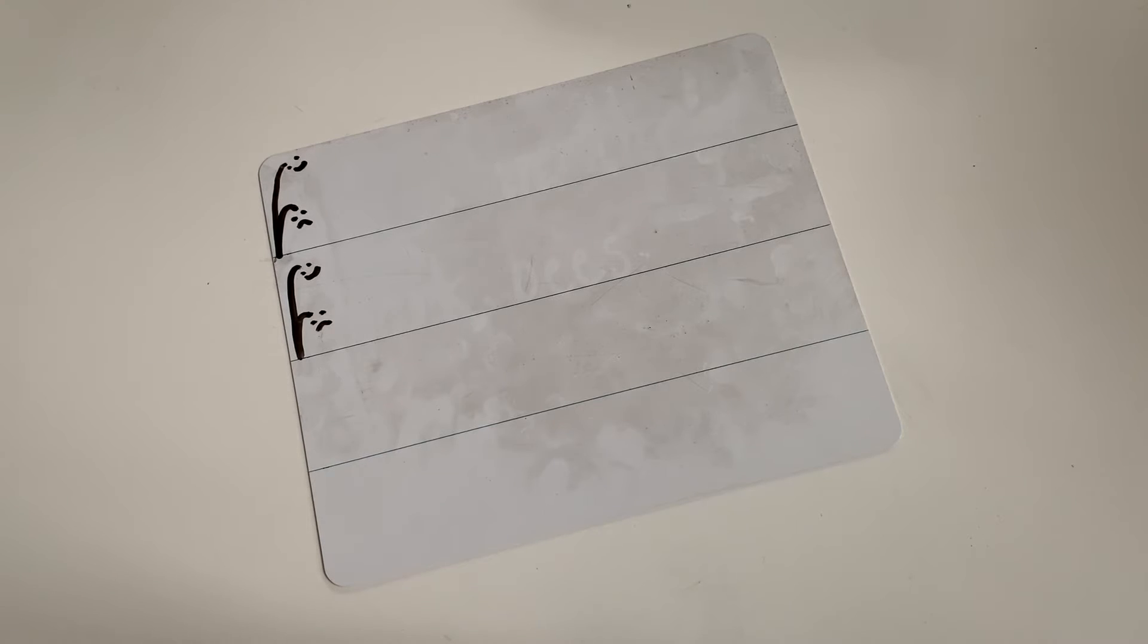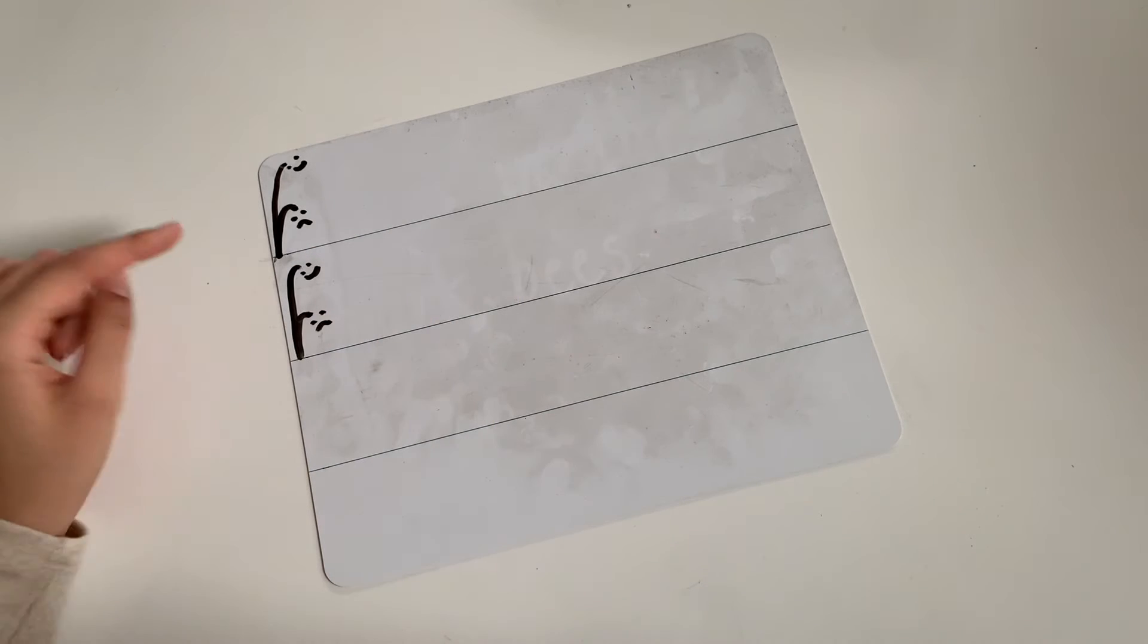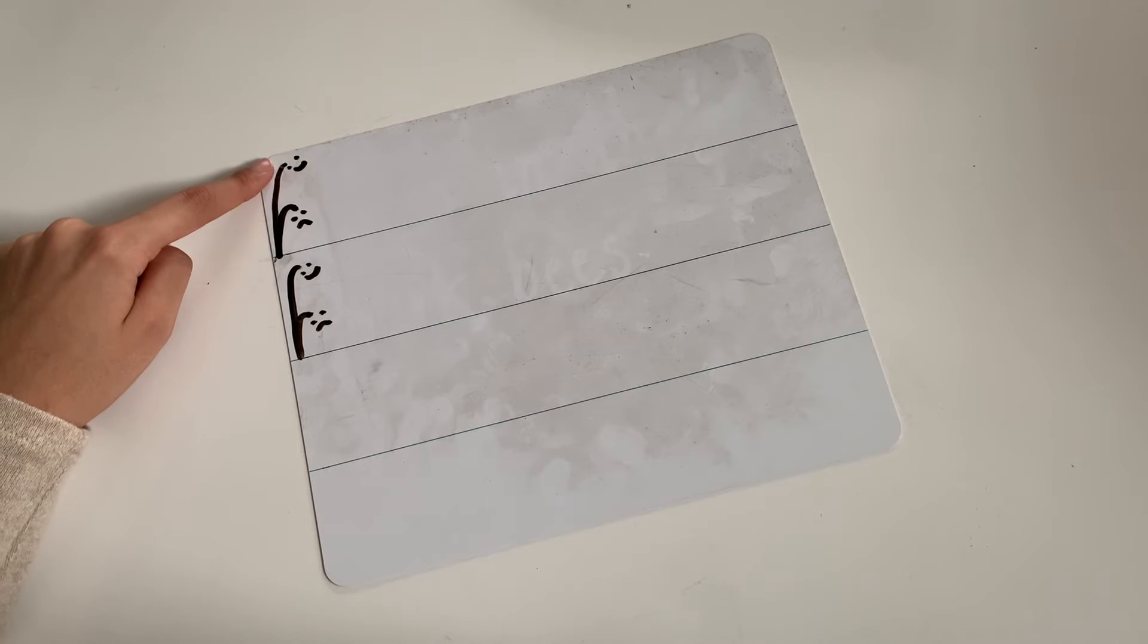When we're starting writing we need to make sure our words and letters are all sat on the line, and our small letters are at the scared monkey, and our tall letters are starting at the brave monkey.